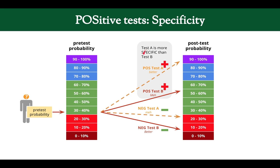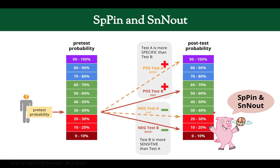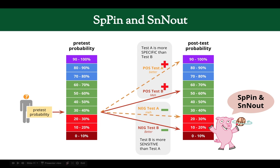Test A is more specific than Test B — it helps you rule in a disease better. Test B is more sensitive than Test A — it helps you rule out a disease. Remember from our video on sensitivity and specificity: high specificity with a positive result helps you rule in, and high sensitivity with a negative result helps you rule out. That's the SpPin and SnOut mnemonic.